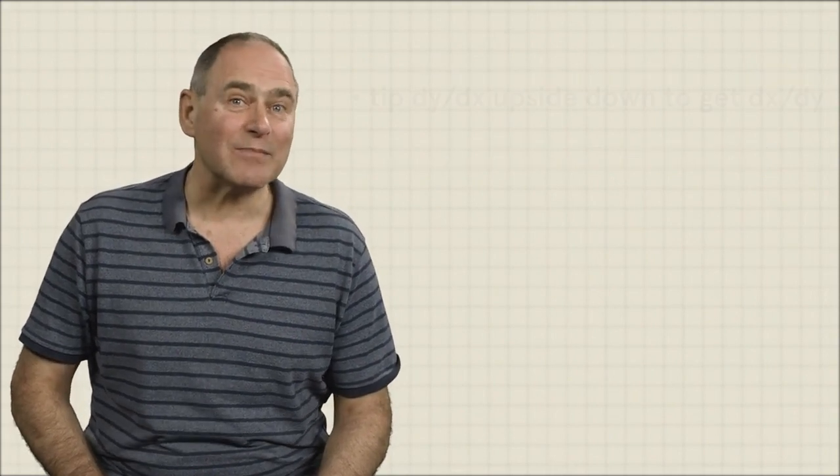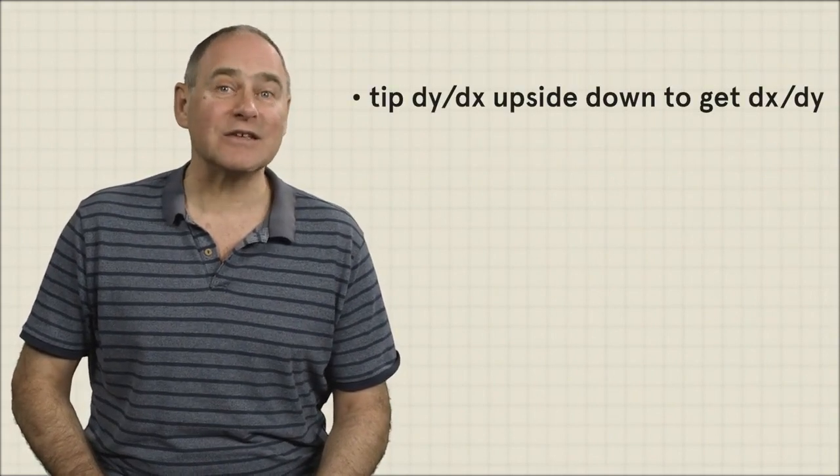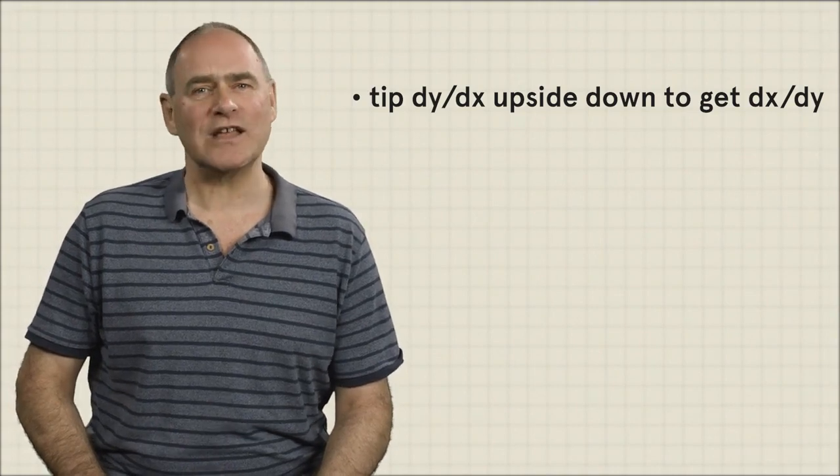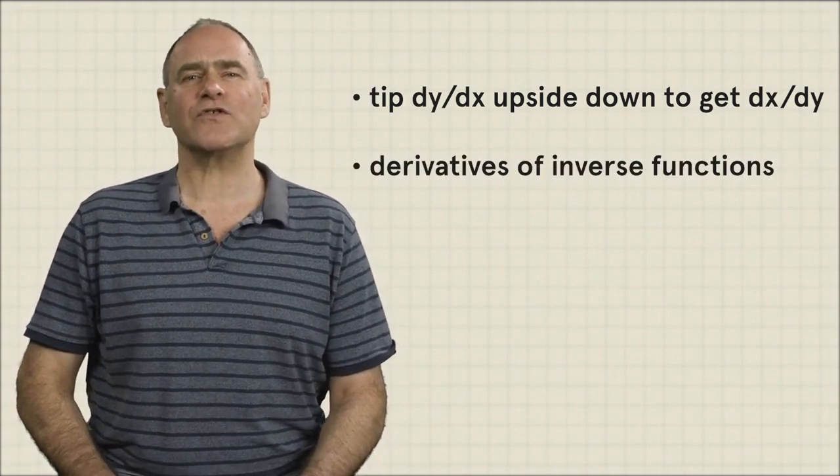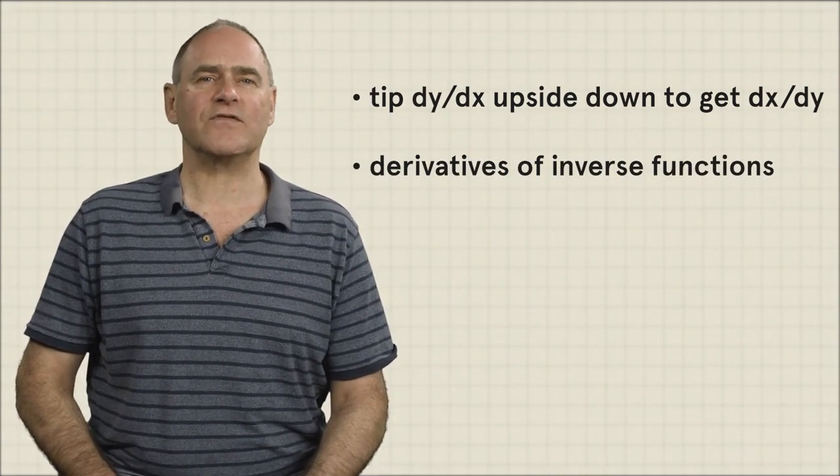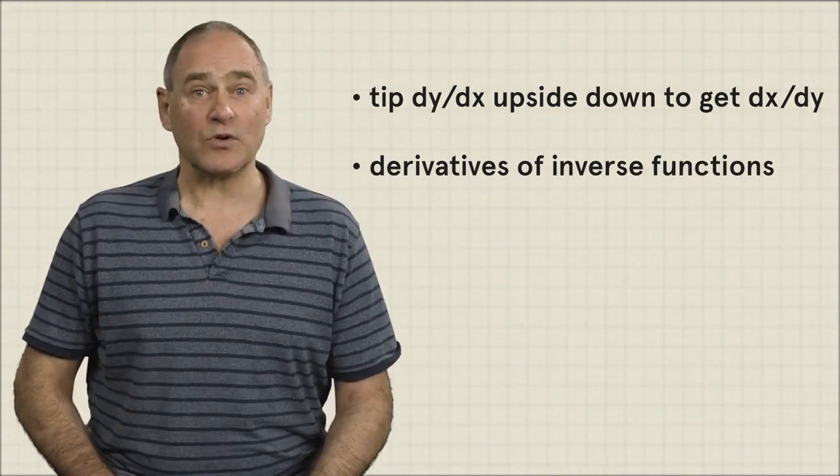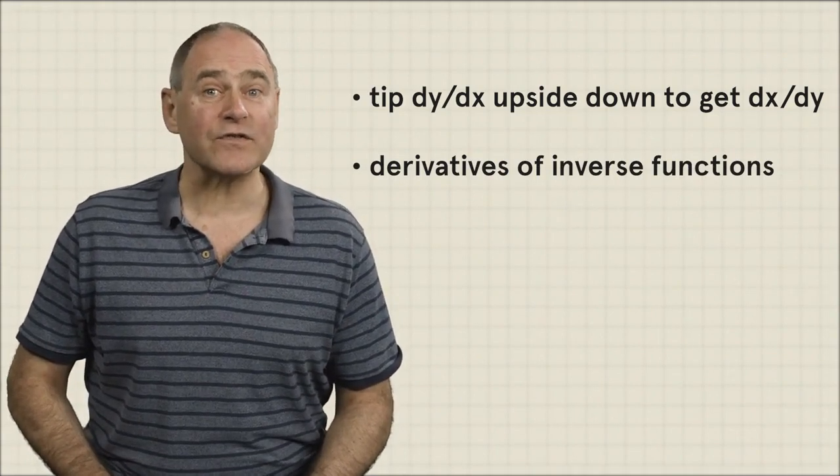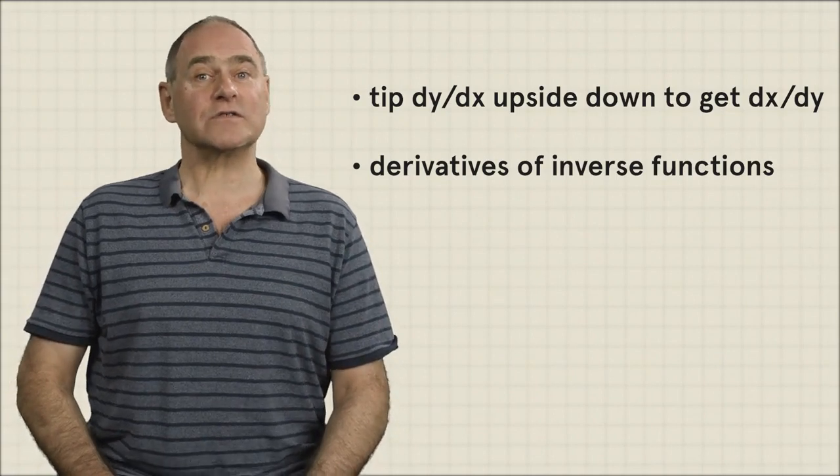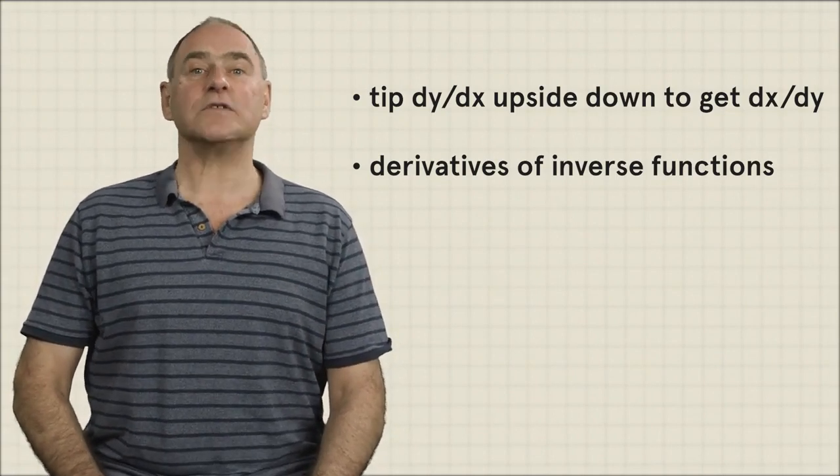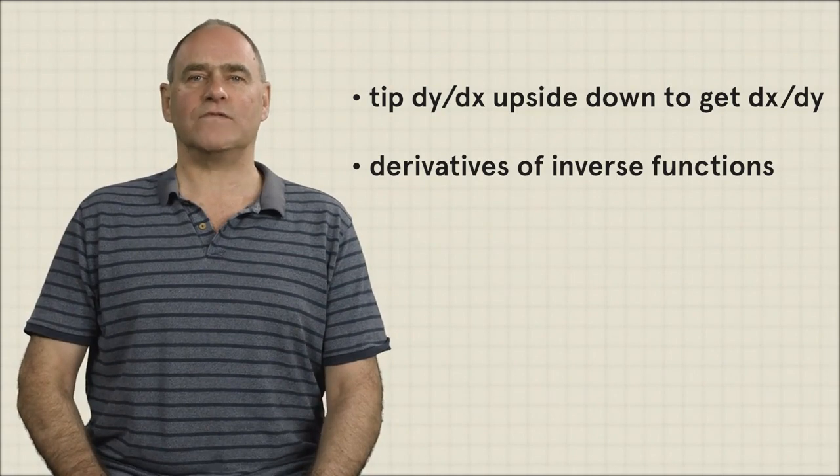One such leap is to invert dy dx to get dx dy, which then can be used to get information about the derivative of the associated inverse function. We exploited this trick to discover that the derivative of the natural logarithm function is the reciprocal function and also to differentiate the square root and cube root functions.